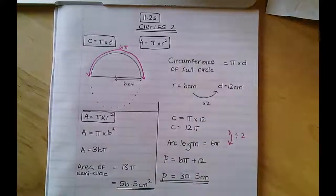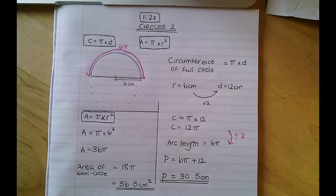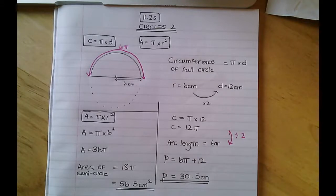And that's how you find the perimeter and the area of a semicircle. That is one specific type of sector — in other words, half of a circle.